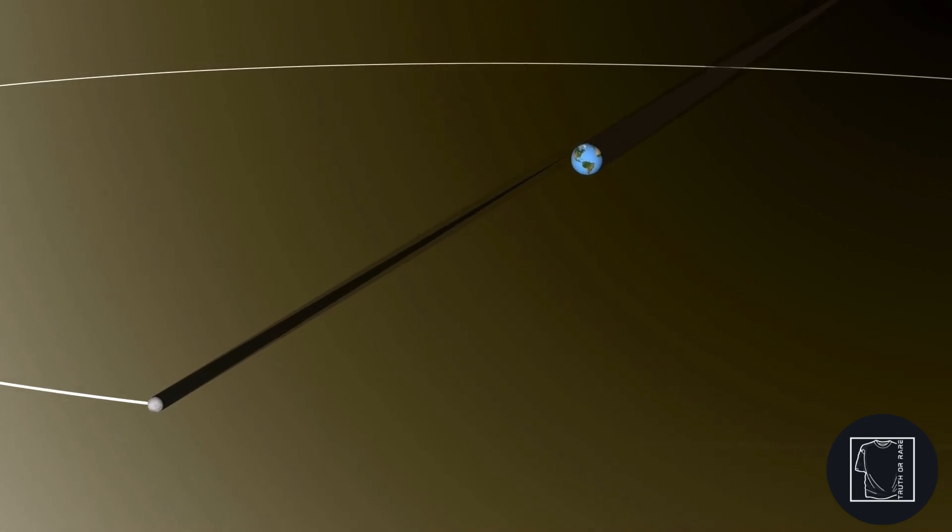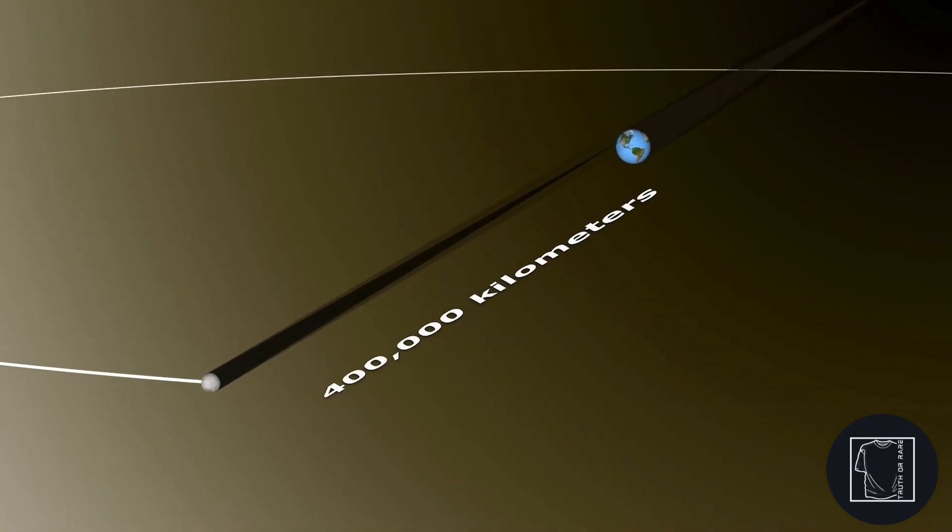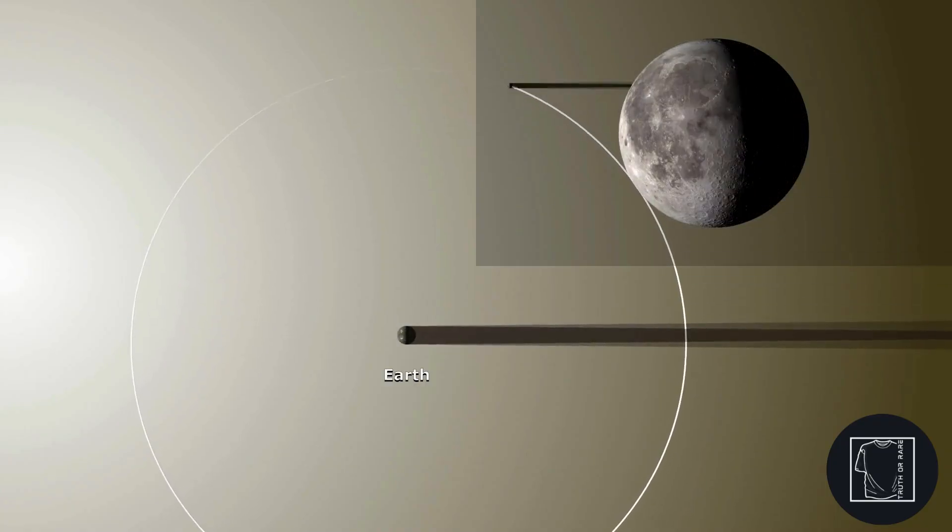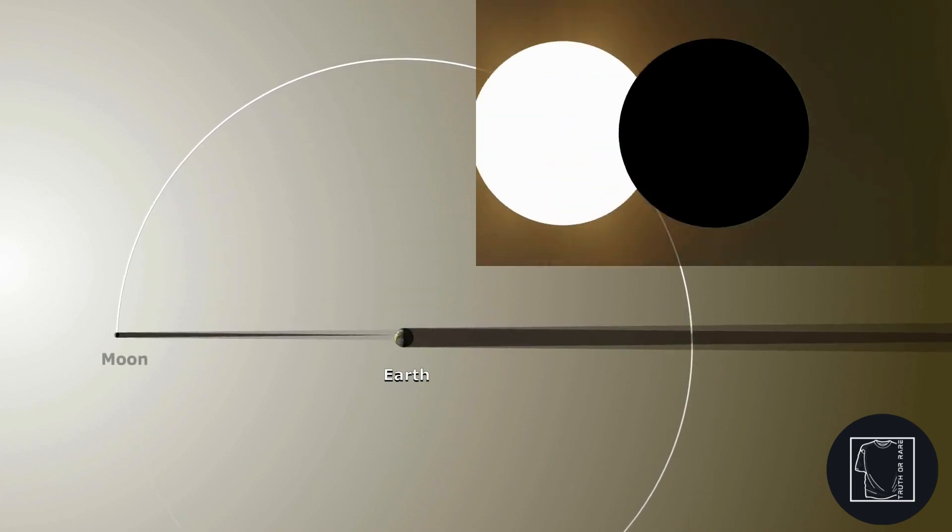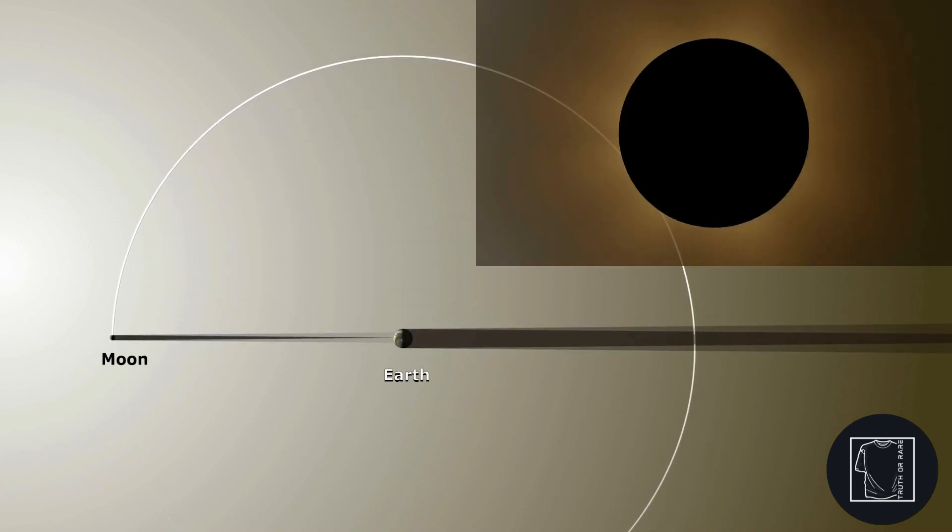In space, it's a cone extending some 400,000 kilometers behind the moon. It's when the small end of this cone hits the Earth that we experience a total solar eclipse.